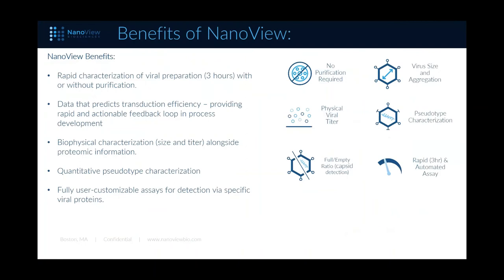The benefits of this method include rapid characterization of the virus — about a three-hour process to have chips ready to scan, with or without purification. Throughout processing streams you're getting data that can be predictive of transduction efficiency, providing a rapid and actionable feedback loop. You get an easy way to collect biophysical characterization data — size and titer alongside proteomic information, additional markers, and quantitative pseudotype characterization — and you can really customize this assay to pull down other things of interest.